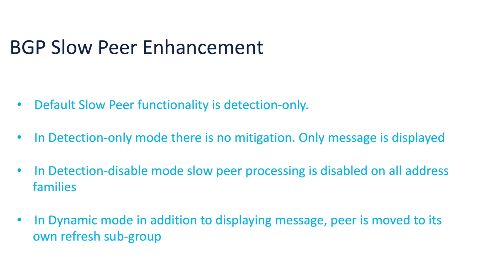When slow peer global configuration is detection disabled, then slow peer processing is disabled on all BGP neighbor address families. When slow peer global configuration is dynamic, all VRF BGP neighbor address families or default address families operate as dynamic slow peers. In dynamic slow peer mode of operation, whenever a neighbor address family is detected as being slow, in addition to displaying a message, the peer is moved to its own refresh subgroup without impacting other peers in the update group or subgroup. This eliminates the task of the network admin to manually remove the peer and move it to a subgroup.